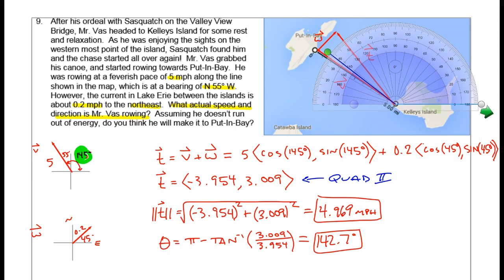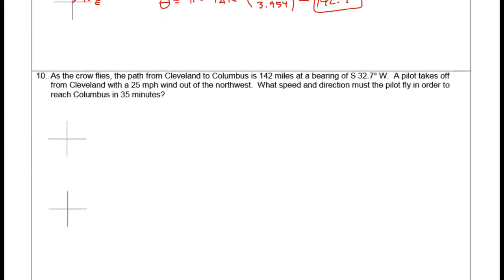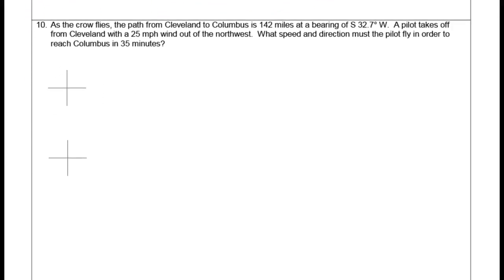Let's move on to question 10. As the crow flies — meaning a straight-line path — from Cleveland to Columbus is 142 miles at a bearing of south 32.7 degrees west. The pilot takes off from Cleveland with a 25-mile-per-hour wind out of the northwest. What speed and direction must the pilot fly in order to reach Columbus in 35 minutes? We have a vector, a wind adjustment, and we need to find the true vector.